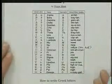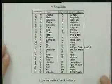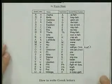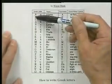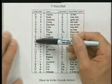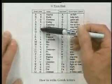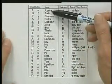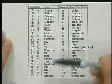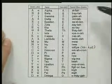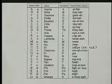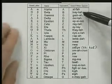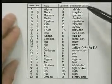Here is a list of the Greek alphabet where we have the uppercase and lowercase, the names, the equivalent in English, and the sound when spoken. So let me just go through pronouncing the Greek alphabet.